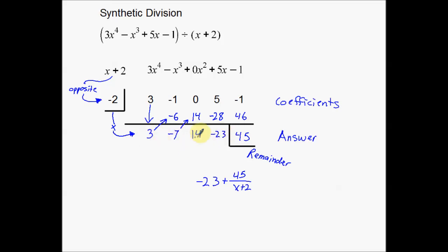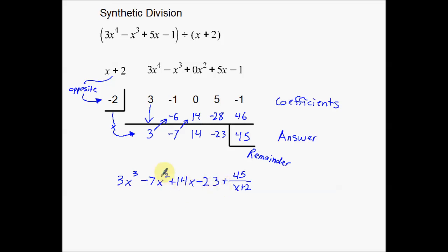The numbers in the answer increase in variable degree as we go left. So 14 is my linear term: plus 14x. Next, negative 7 is my quadratic term: minus 7x squared. Then 3 is my cubic term: 3x to the third. Notice the progression: x cubed, x squared, x, no x's (constant), remainder. So the full answer is 3x cubed minus 7x squared plus 14x minus 23 plus 45 over (x plus 2). That's why I worked backwards — starting with the remainder up to the highest degree term.